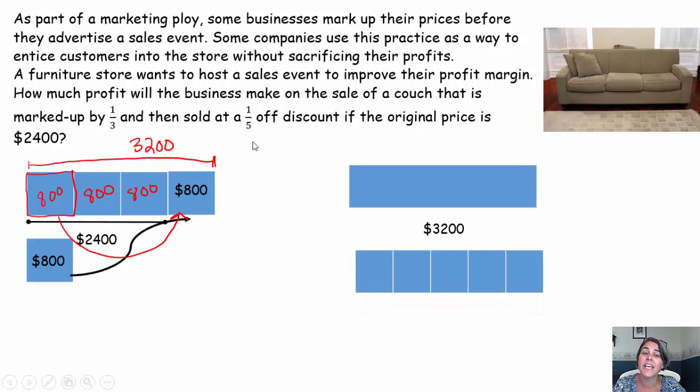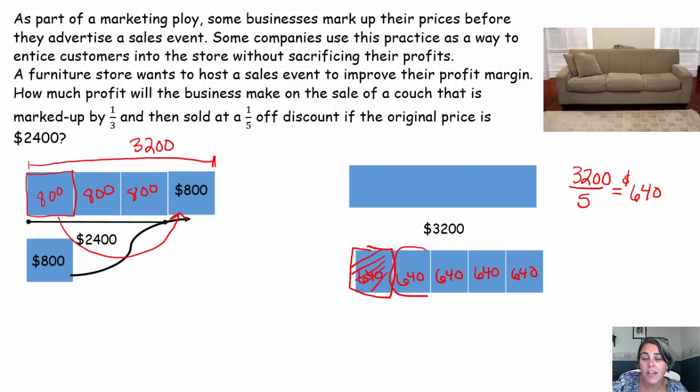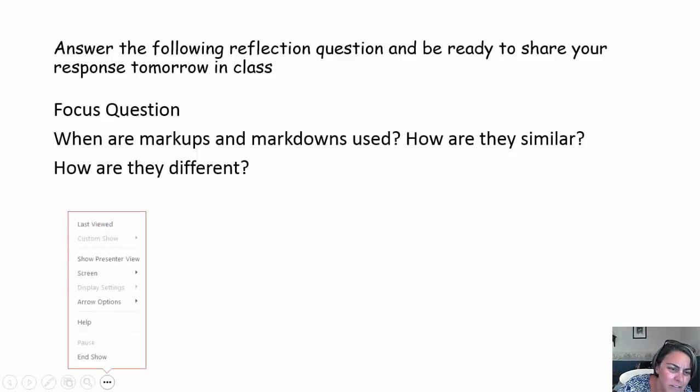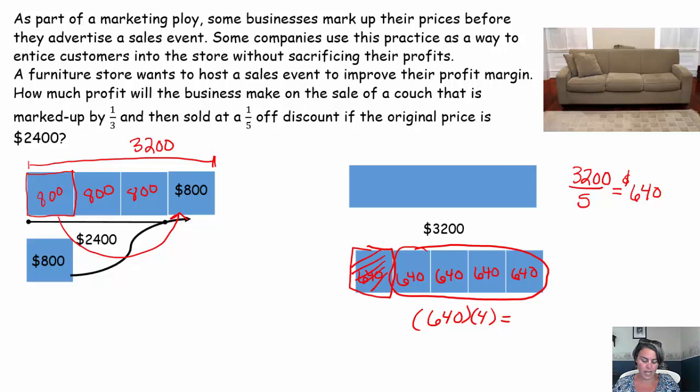Once you come up with the $3,200, we're going to take one-fifth off of that. So I'm going to take $3,200 and break it into five parts, $3,200 divided by five, use your calculator if you need, I believe is $640. So a fifth of $3,200 is $640. And what you are going to do is you're going to want to take off one-fifth, it's one-fifth off, take off one-fifth from that $3,200, you're still paying four-fifths. So if I take $640 times four, I get $2,560. So $2,560 is what they are going to sell that couch for.